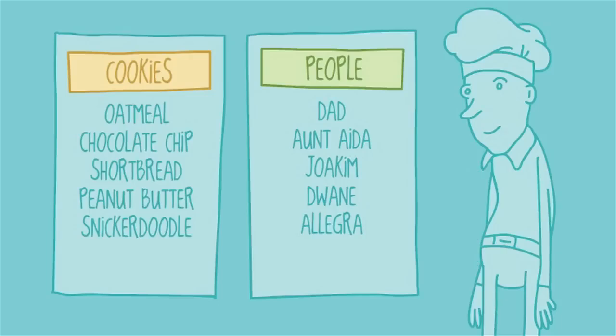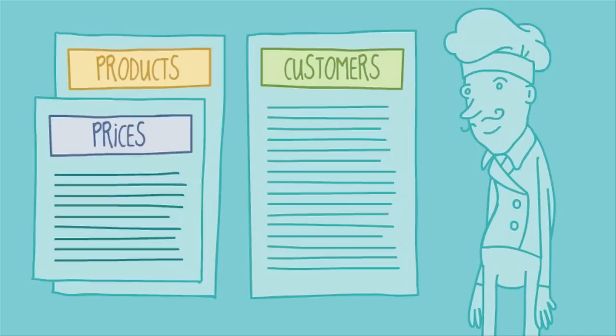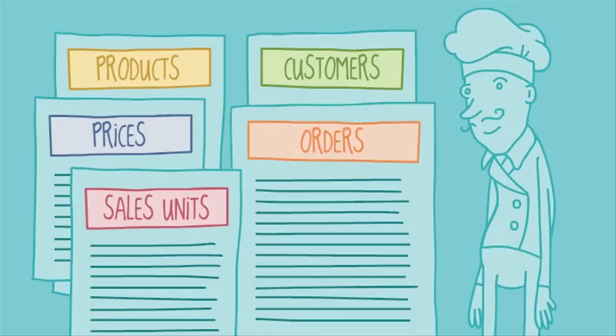If you were a professional baker, your database would contain more. You'd have products and customers, and other things to keep track of like prices, sales units, and a list of orders.